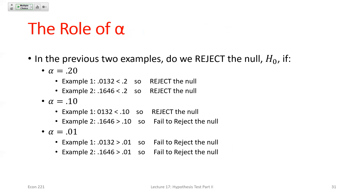One important note: with the p-value approach, once you compute a p-value you can quickly test at many different alphas. Nothing changes except comparing that p-value to different thresholds — 0.01, 0.05, 0.10 — corresponding to 99, 95, and 90 percent confidence. In the first example we could reject at the 20 and 10% significance levels but not the 1%. In the second example we could only reject at the 20% level. On Friday we'll cover hypothesis testing in Excel.